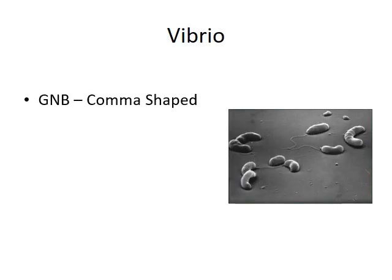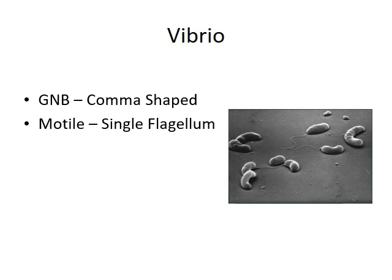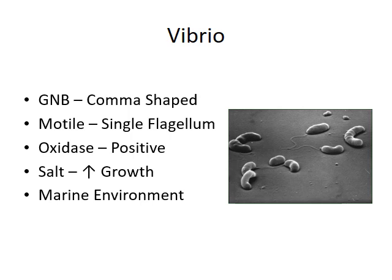Vibrio is a Gram-negative bacilli, typically a comma-shaped bacillus having a single flagellum. They are actively motile organisms and their motility is described as darting motility. Their oxidase test is positive, their growth is enhanced in the presence of salt, and they are typically seen in marine environments. The important species of Vibrio is Vibrio cholerae, which is responsible for the disease cholera.